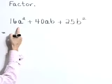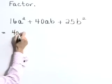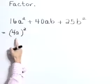Our first term, 16a squared, is 4a times 4a, or 4a quantity squared.